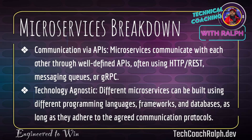Microservices communicate via APIs — with each other through well-defined APIs, often using HTTP/REST APIs, messaging queues, and gRPC. If you remember from our API study, we looked at how the different API calls — POST, GET, PUT, PATCH, etc. — work. The microservices are using those API calls to interact with one another.